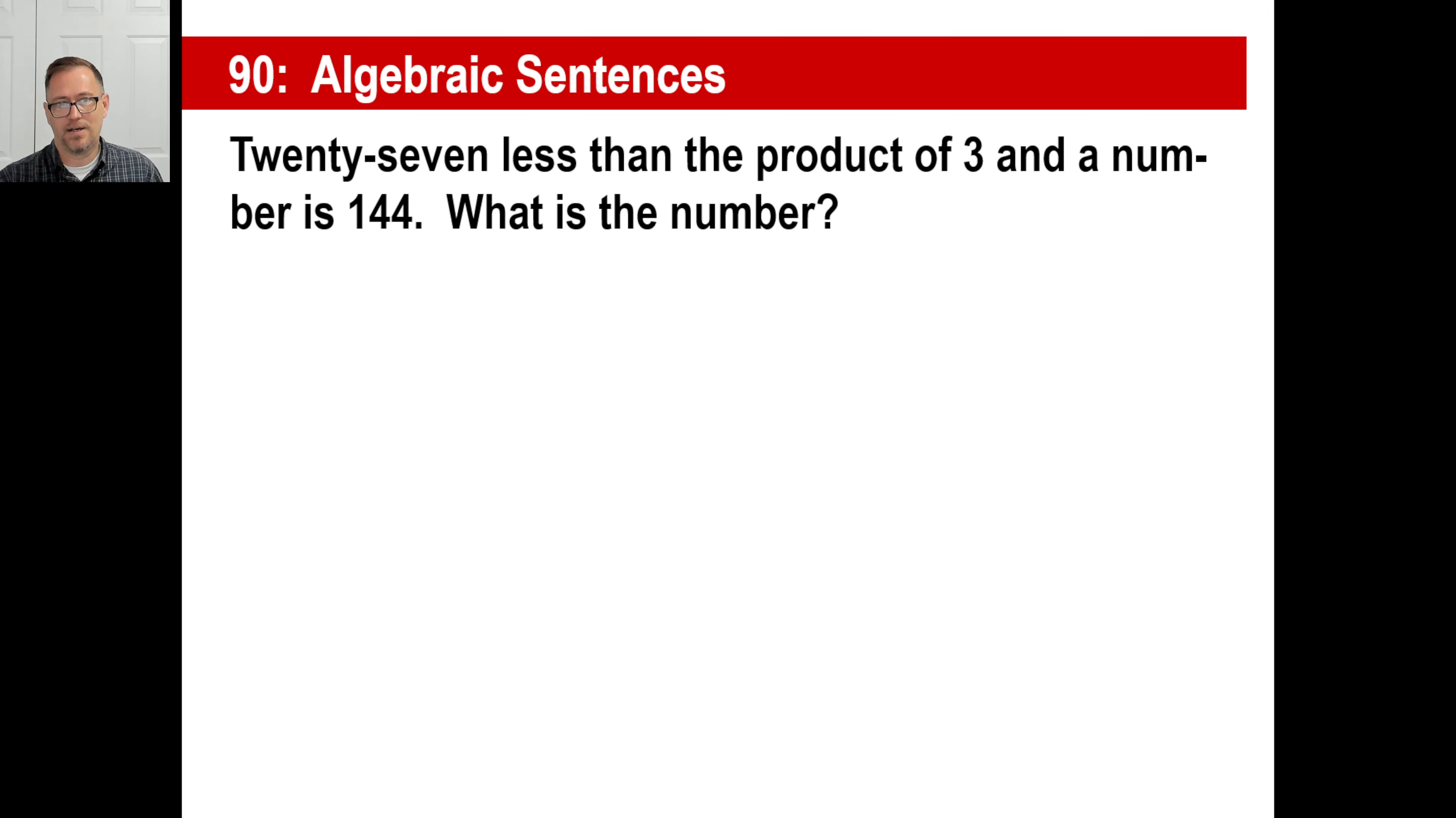Let's try another one. 27 less than the product of three in a number is 144. What's the number? Well, let's just get the chunks going.